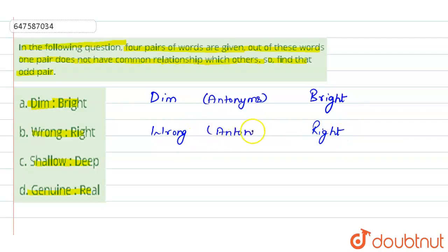And shallow and deep, shallow and deep are antonyms which are opposite. So this is why it is antonym which is opposite.